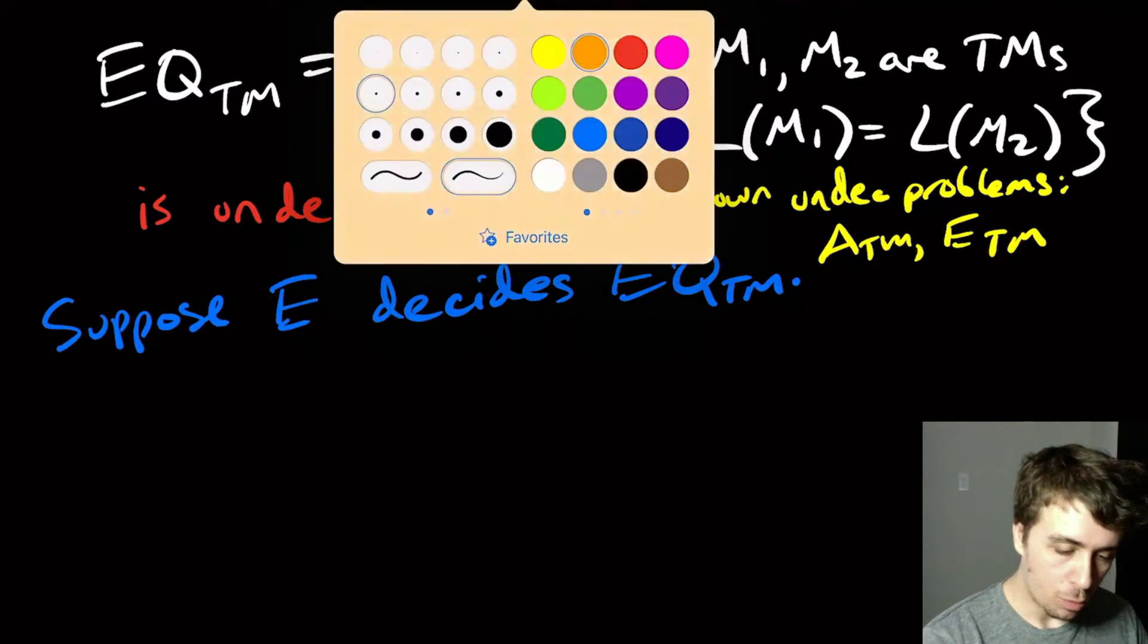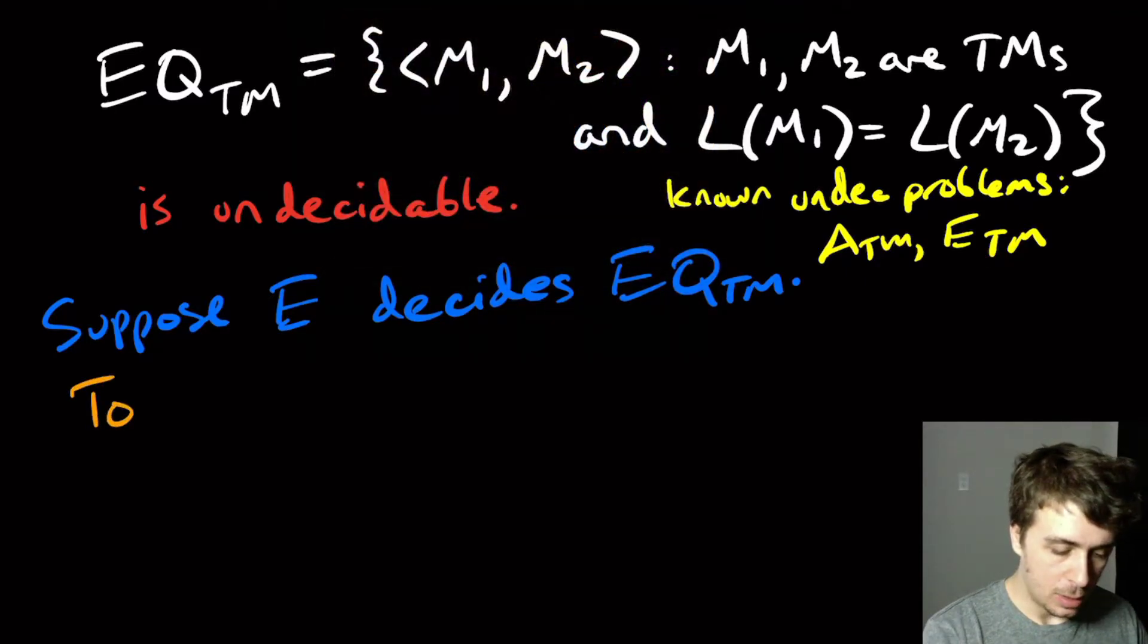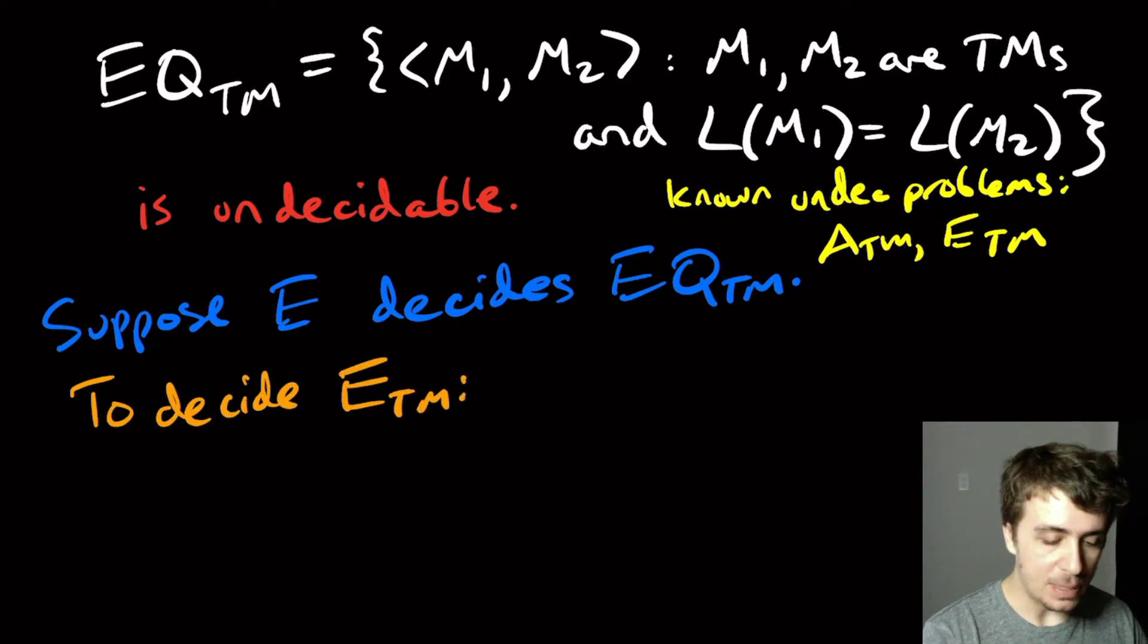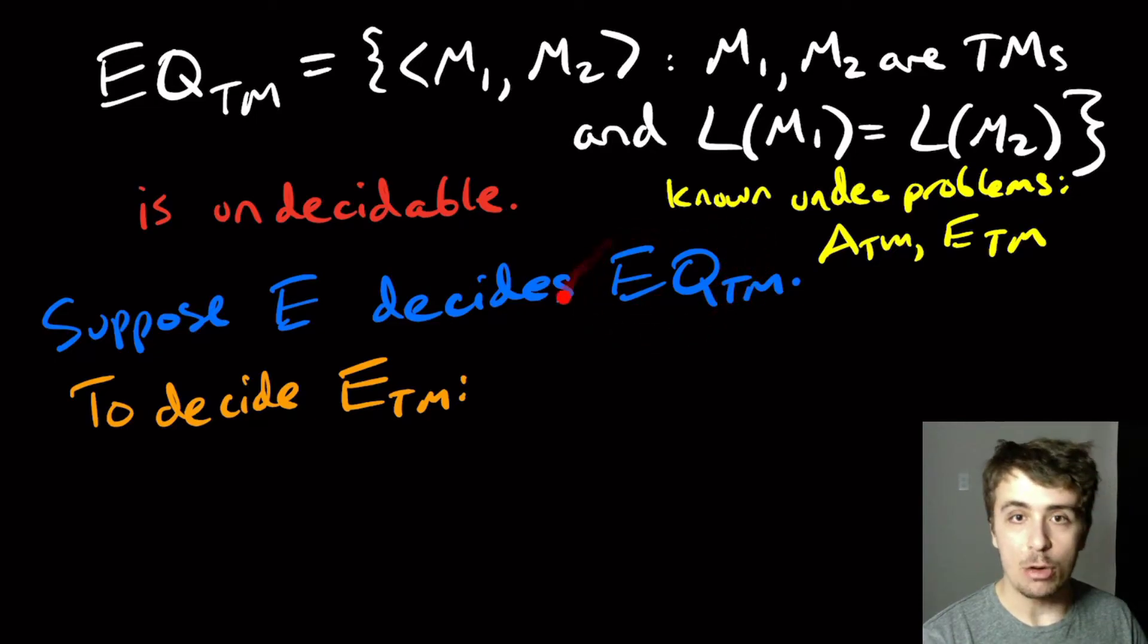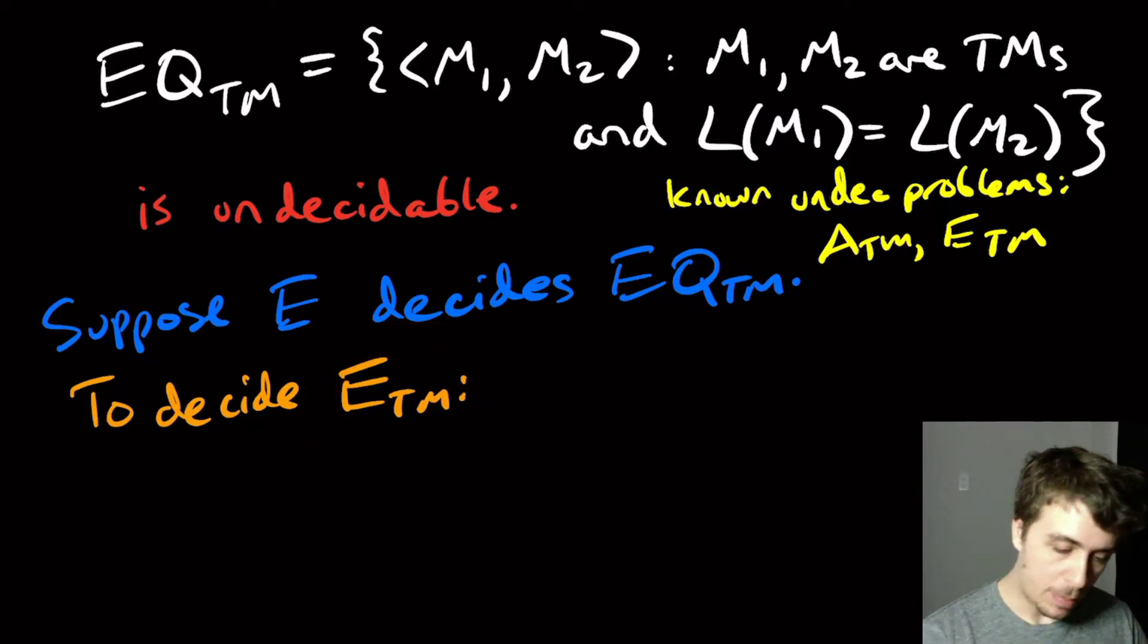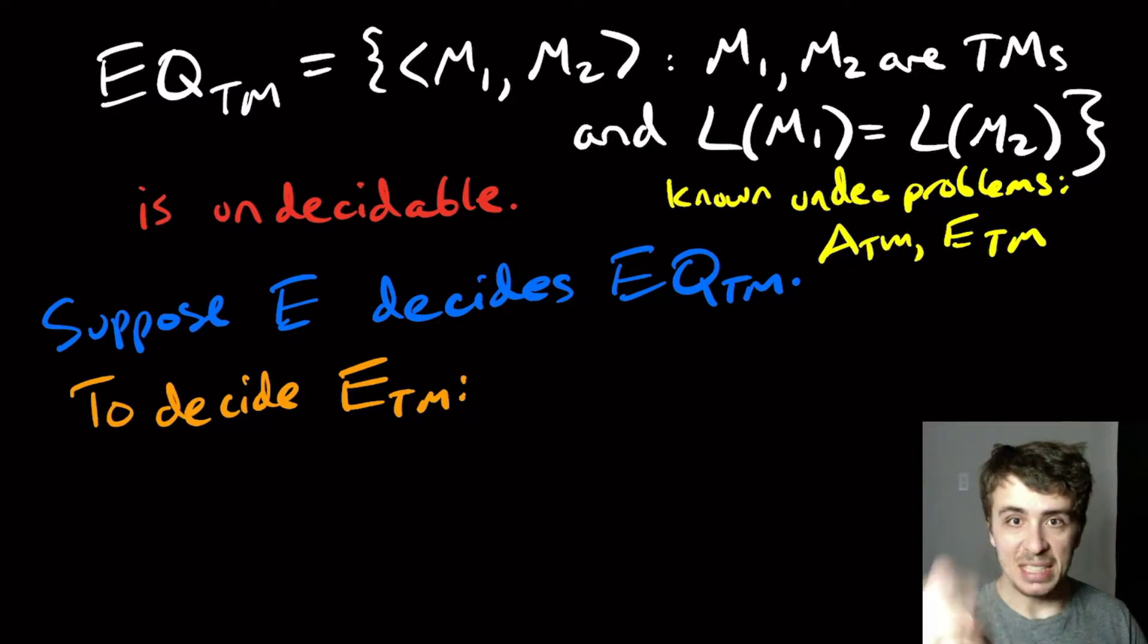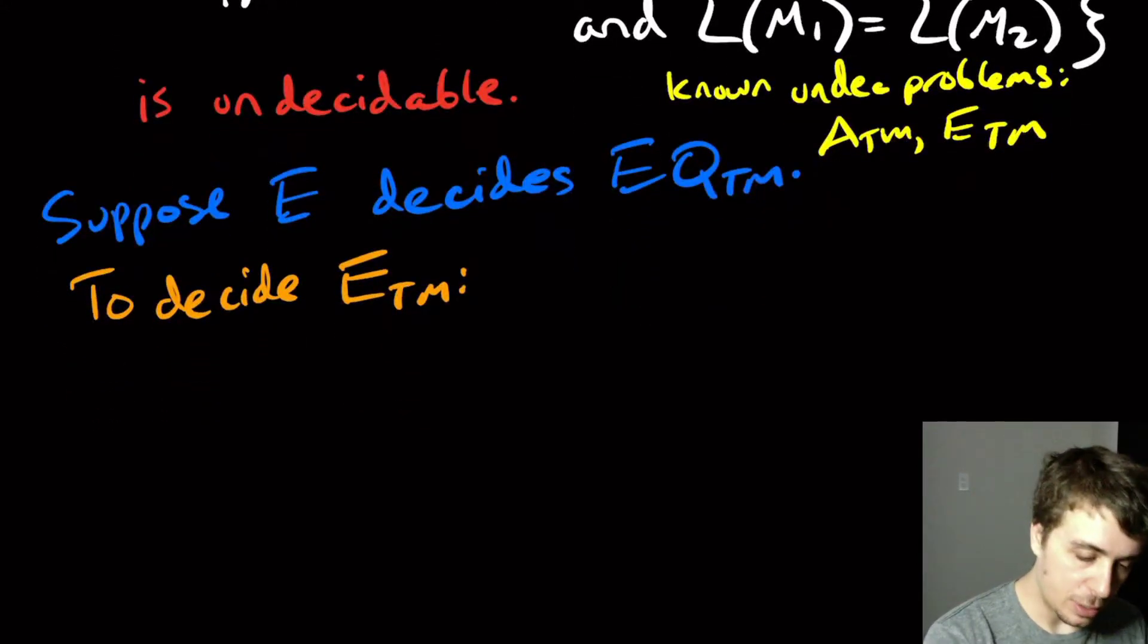So here we're going to decide ETM, the emptiness problem. Assuming that the equivalence problem is solvable, can I solve the emptiness problem? Well, remember that the emptiness problem you're given exactly one Turing machine, whereas the decider supposedly for EQ requires two. So here's how this is going to work.